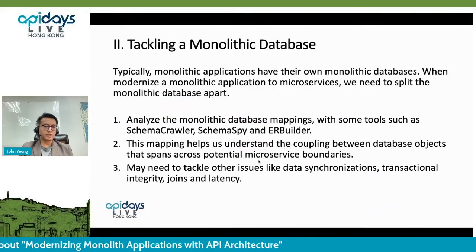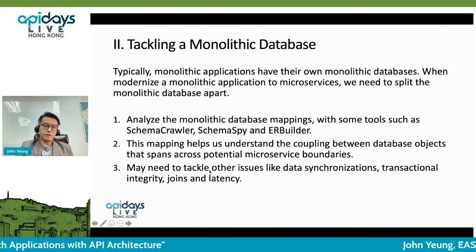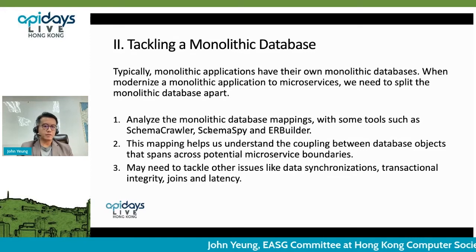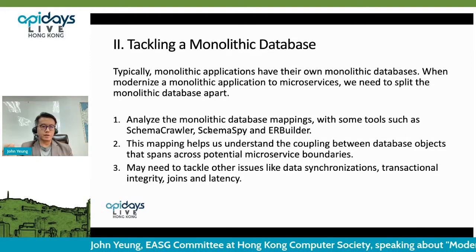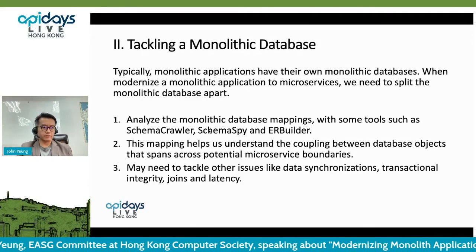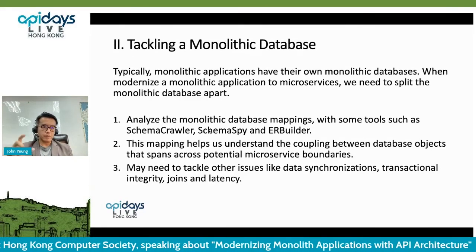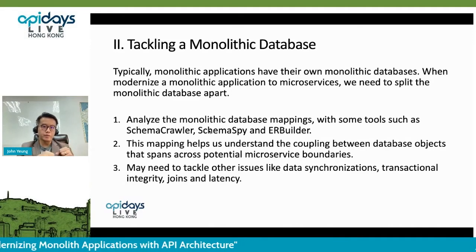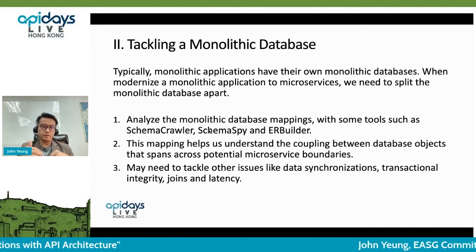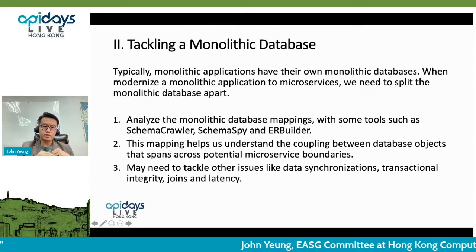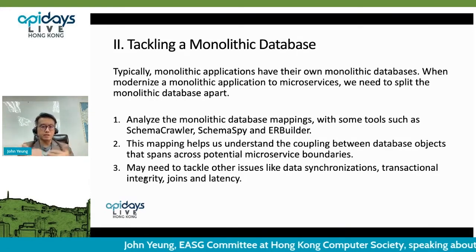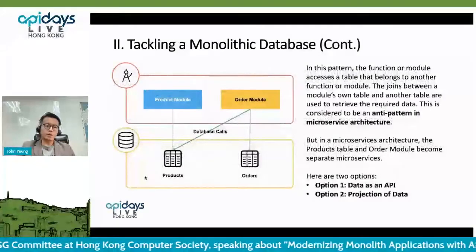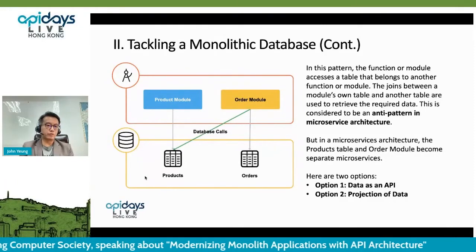How do we tackle the monolithic database? We have three steps. The first step is to analyze the monolithic database mappings using tools like schema crawler, schema spy, and similar builders. This kind of mapping helps us understand the coupling between data objects and how to find potential microservices boundaries in terms of data entities. We also need to tackle technical issues like data replication, synchronization, and data integrity.